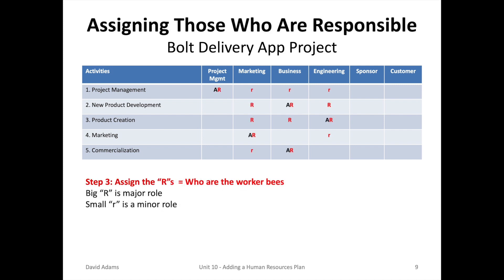The next letter to assign is R — who is responsible? These are the worker bees, and you can put a big R for a major role or a little r for a minor role. For instance, in project management, you can see the project management activity where the project manager is both accountable and does the majority of the work, but marketing, business, and engineering also participate.